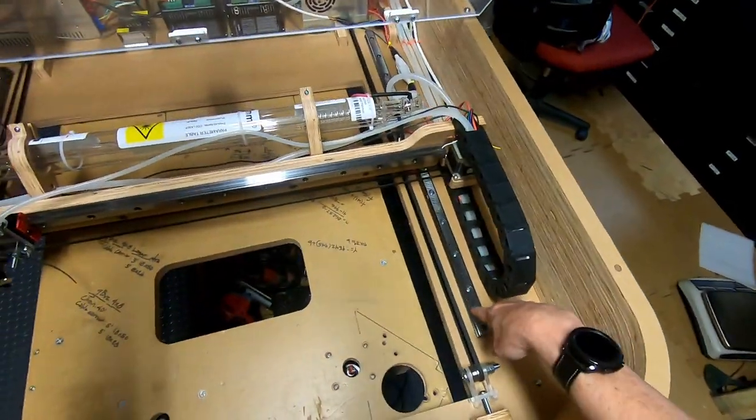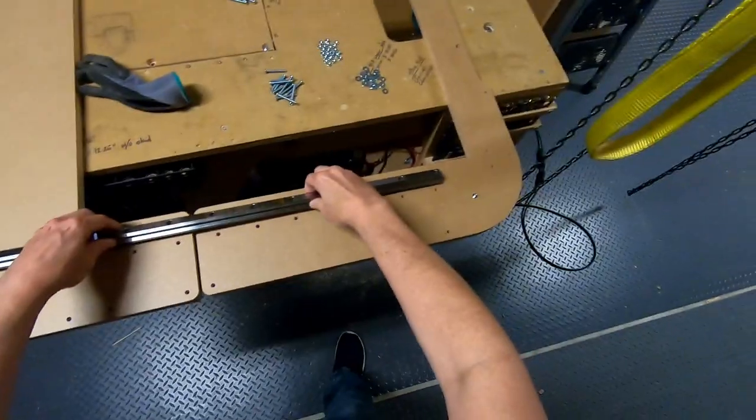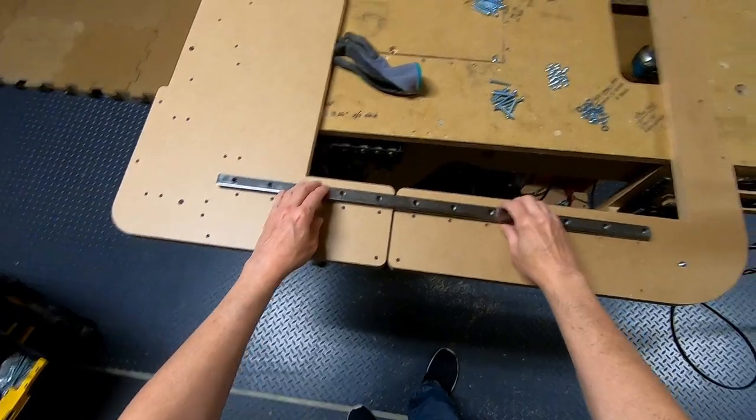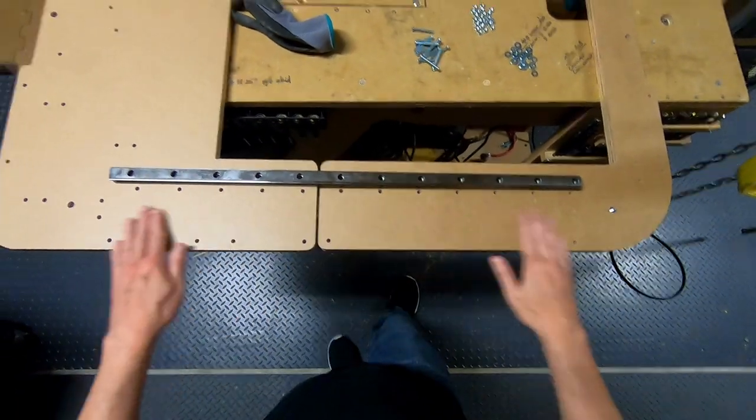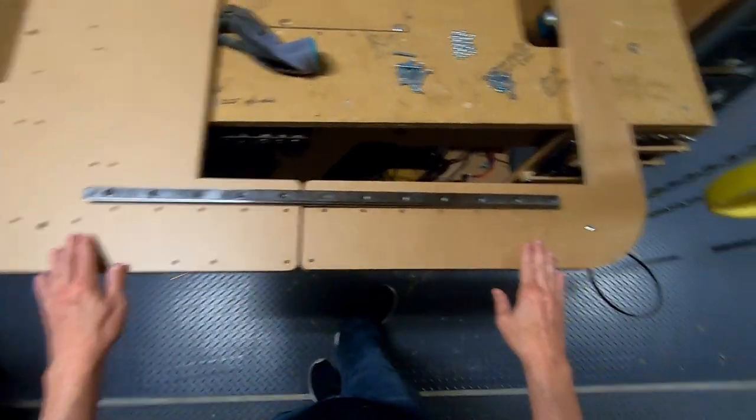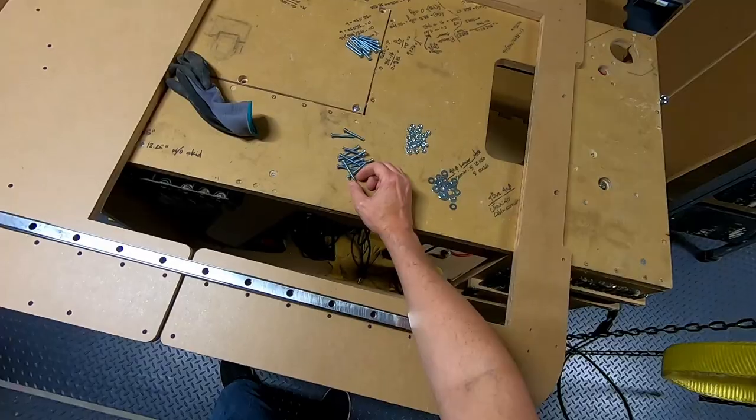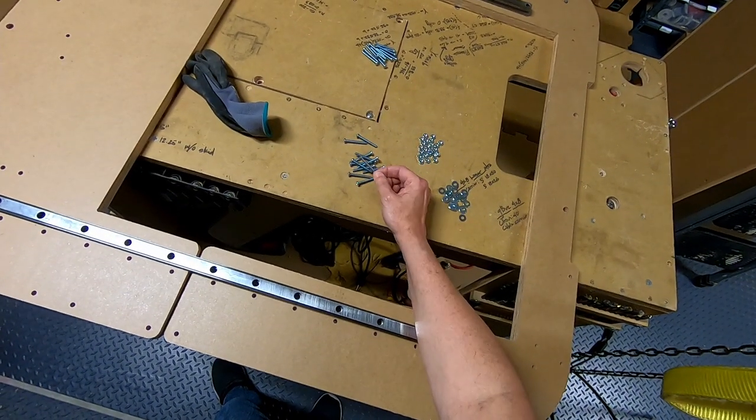In this step, the two guide rails will be installed. Fasten the linear rails to the base, or the two parts of the base of the laser. So you'll need 12 screws on each side, number eight, one and a half inch. So that makes 24.